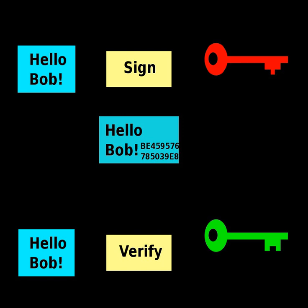A digital signature scheme typically consists of three algorithms. A key generation algorithm that selects a private key uniformly at random from a set of possible private keys; the algorithm outputs the private key and a corresponding public key. A signing algorithm that, given a message and a private key, produces a signature. A signature verifying algorithm that, given the message, public key, and signature, either accepts or rejects the message's claim to authenticity.